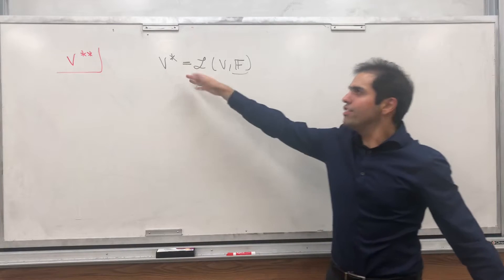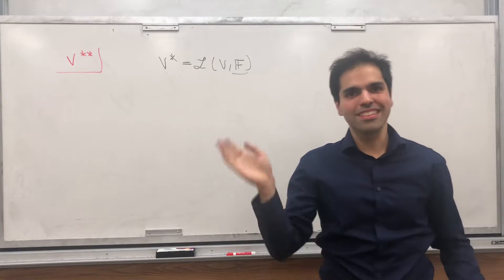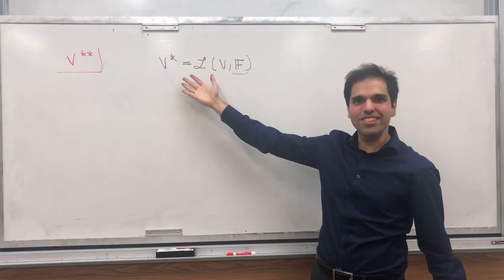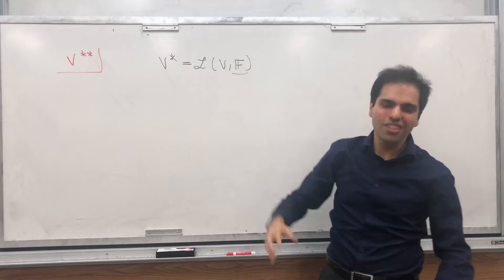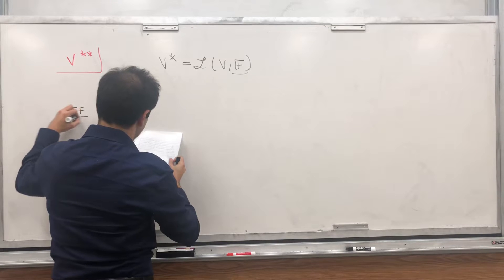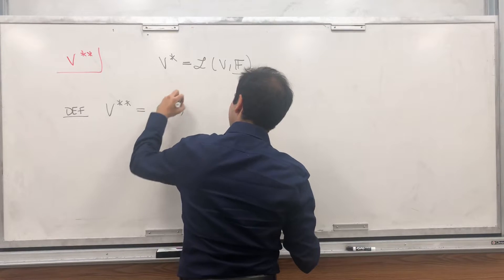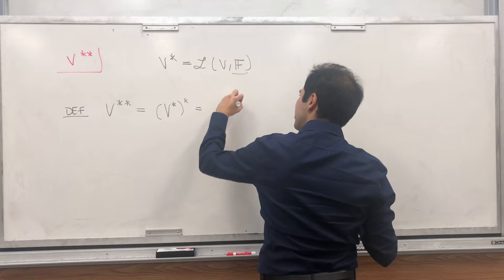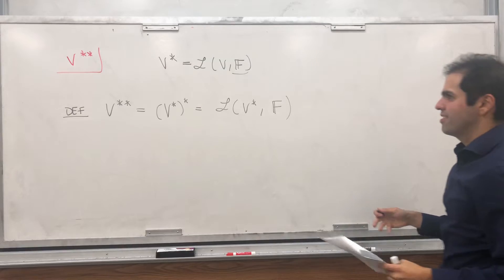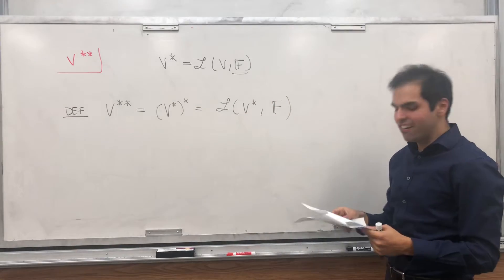And here's the thing, V star, because it's a set of linear transformations, is itself a vector space. So today, let's do something freaky, let's define V double star, which is simply the dual of the dual. So definition, V double star, that's just V star star. In other words, the linear transformations from V star to a field. It's a freaky thing, objects which take functions as its input and spit out numbers.